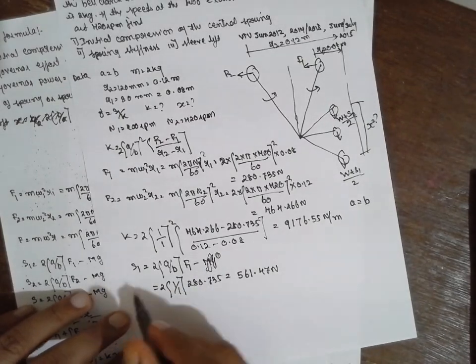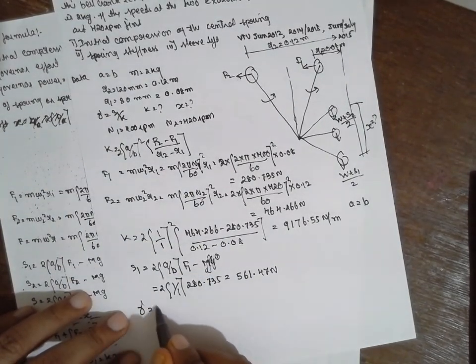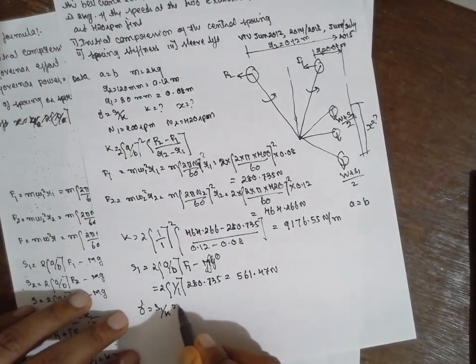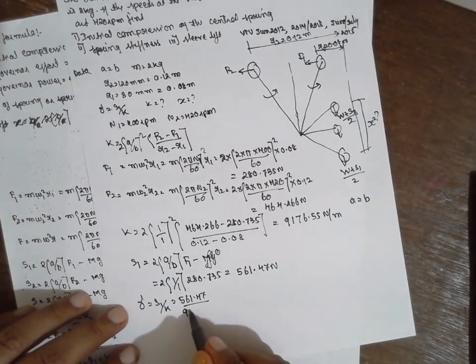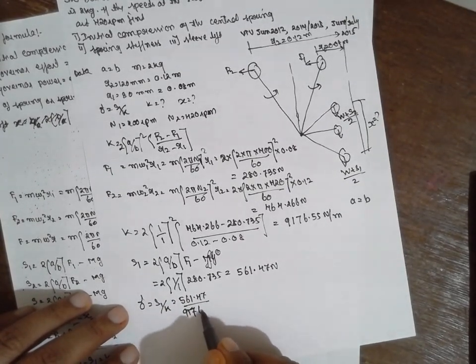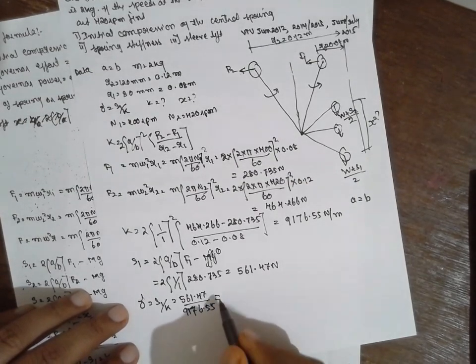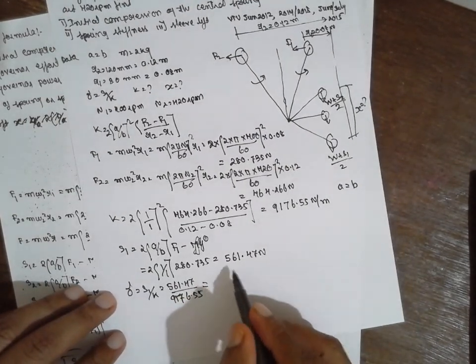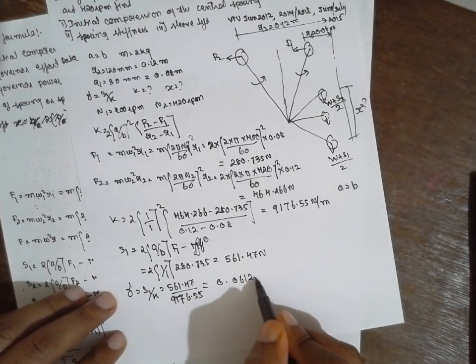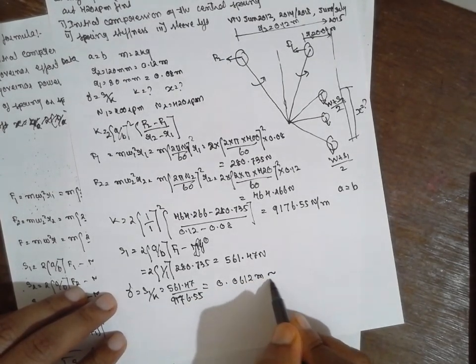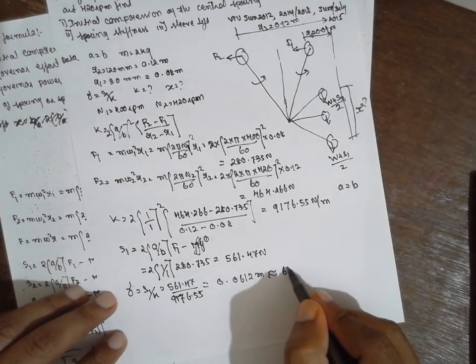Now find out delta. Delta is equal to S1 divided by K. 561.47 divided by K will be 9176.55. The answer for this one is 0.0612 meter, in terms of mm it will be 61.2 mm.